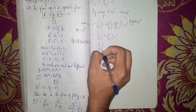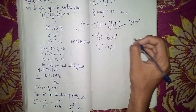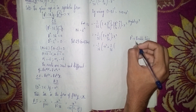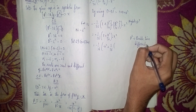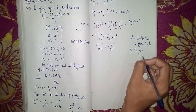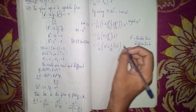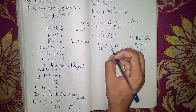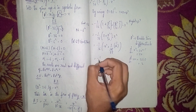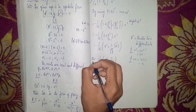Therefore: PI = -1/36 · (x² + (1/36)·2) = -1/36 · (x² + 1/18). This is our particular integral, completing step 2.